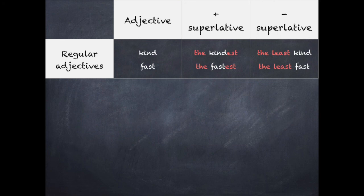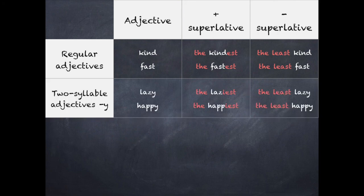El menos rápido, el menos amable. With two-syllable adjectives ending in Y, we will substitute — we will change the Y for an I. For example, with 'happy' or 'lazy', we will use 'the laziest' or 'the happiest'.